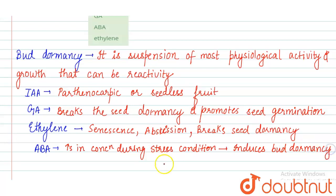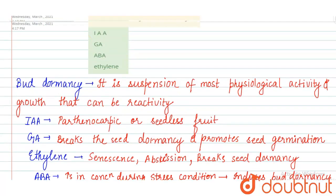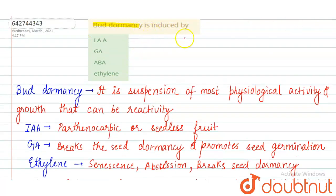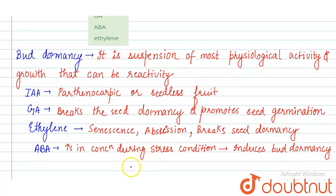When conditions return to normal, the bud dormancy is broken. So in the question it was asked which hormone induces bud dormancy. The correct option is option C, that is abscisic acid. So our final answer is option C — abscisic acid. Thank you.